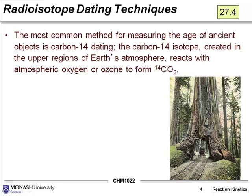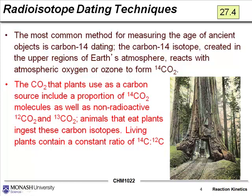So you've probably heard of carbon-14 dating before. It's the most common method for measuring the age of ancient biological objects and so on. The carbon-14 isotope is created in the upper regions of the Earth's atmosphere and reacts with atmospheric oxygen or ozone to form carbon dioxide which doesn't have carbon-12 but carbon-14. And as hopefully you guys know, the CO2 that plants use as a carbon source to build those plants and build those leaves and stems and tree trunks gets incorporated into those materials.